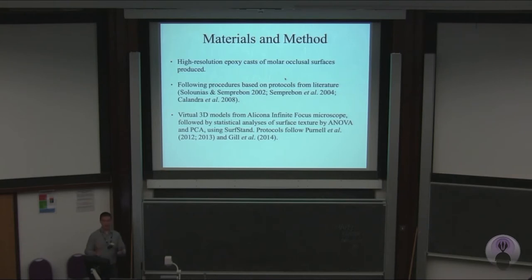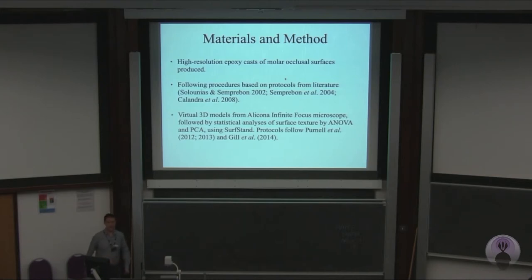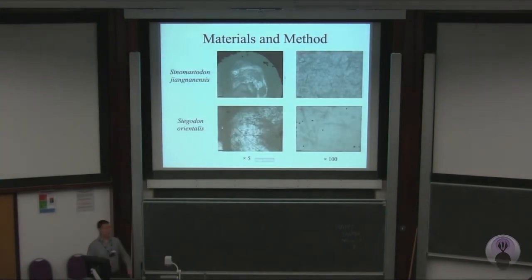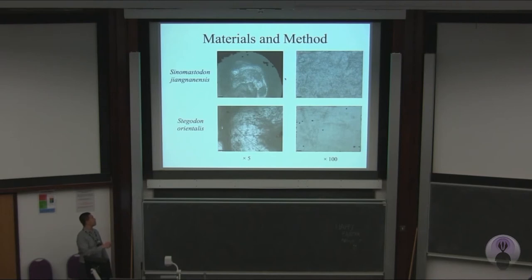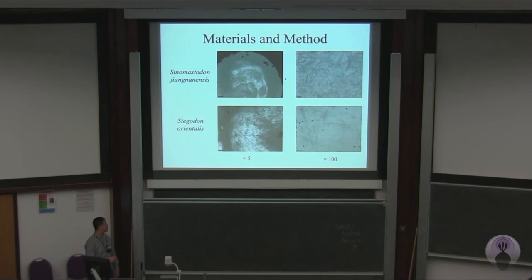Once the Alicona microscope software captures the 3D image, it is analysed using scale-sensitive fractal analysis to pick up statistical differences in surface texture, which is then analysed using ANOVA and PCA. On the left side are the low-magnification images from the occlusal facets of Sinomastodon and Stegadon — this is the type of magnification Solounias and Rivals would use. But with the Alicona infinite focus microscope, you can really distinguish areas resulting from actual tooth wear from chewing versus defects.